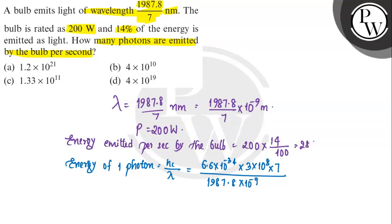The 7 will cancel out. When we calculate this, we get 139.146 × 10^-26 divided by 1987.8 × 10^-9. Calculating this gives us 7 × 10^-19 joules, which is the energy of one photon.